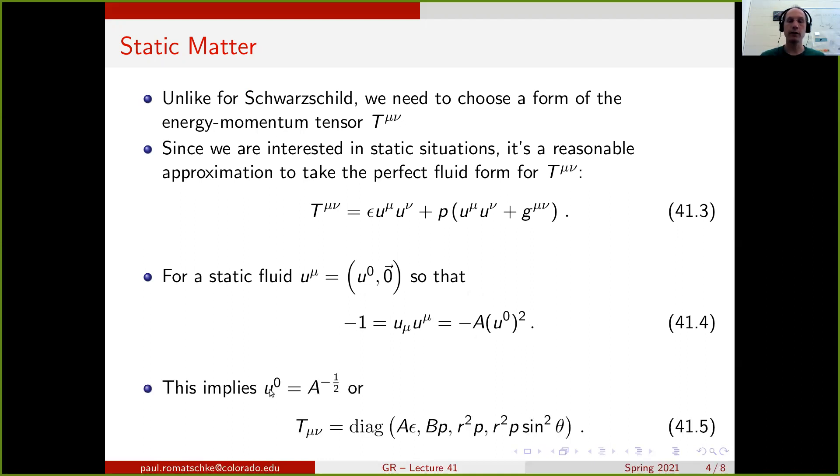Solving for u0, we find that u0 has to be the inverse square root of the factor A, which appears in the metric. And if we then plug this into the form of the energy-momentum tensor, now with lower components, we find that the energy-momentum tensor is a diagonal matrix with the entries A times energy density epsilon, B times pressure, r-squared times pressure, r-squared times pressure times sin squared theta.